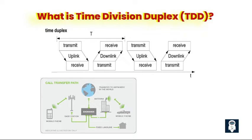One of the significant advantages of time duplexing is its efficient utilization of the available frequency spectrum. Since uplink and downlink transmissions share the same frequency channel, it eliminates the need for separate frequency bands, leading to enhanced spectral efficiency. This is particularly beneficial in scenarios where the available frequency spectrum is limited or costly. Time duplexing is commonly employed in various wireless communication systems, including cellular networks (e.g., 3G, 4G, and 5G), wireless local area networks (LANs), and wireless point-to-point links. It provides an effective solution for achieving bidirectional communication over a shared frequency channel, offering flexibility and efficient spectrum utilization. However, time duplexing requires accurate timing synchronization and coordination between devices to avoid interference and ensure seamless and reliable communication.